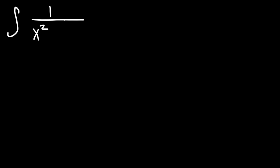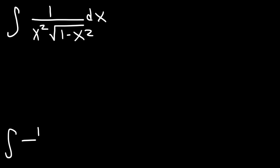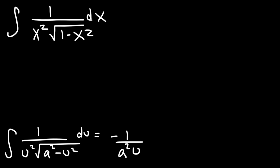What is the integral of 1 divided by x squared times the square root of 1 minus x squared dx? The first thing you need to do is identify the appropriate formula to use — you can find this in the back of your calculus textbook. The formula we need is: the integral of 1 over u squared times the square root of a squared minus u squared du, which equals negative 1 over a squared u times the square root of a squared minus u squared, plus c.